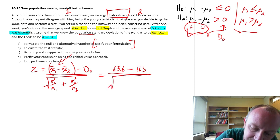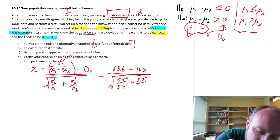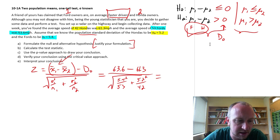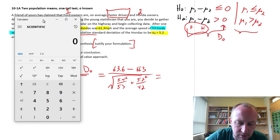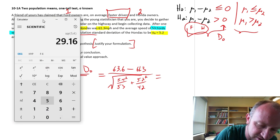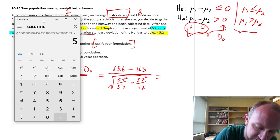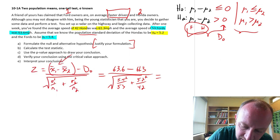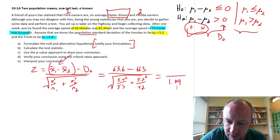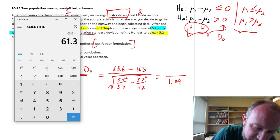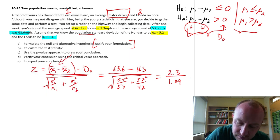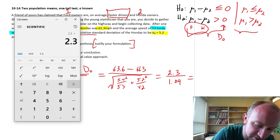Divided by, here let's put in our sigmas. So this is going to be 5.4 squared over 53 Fords plus 5.2 squared over 42 Hondas. Okay, where's my calculator here? So this I'm going to work within the square root sign first. 5.4 squared divided by 53 plus 5.2 squared divided by 42, and square root that. So my denominator here is 1.09 and my numerator, 63.6 minus 61.3 is 2.3.